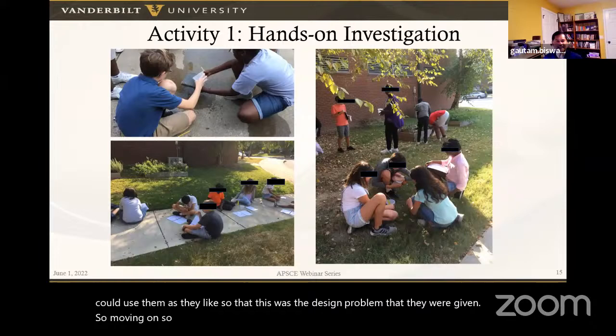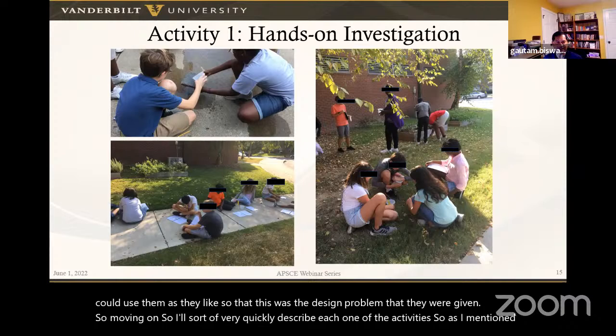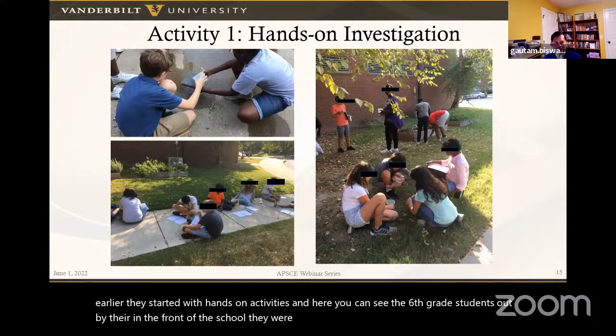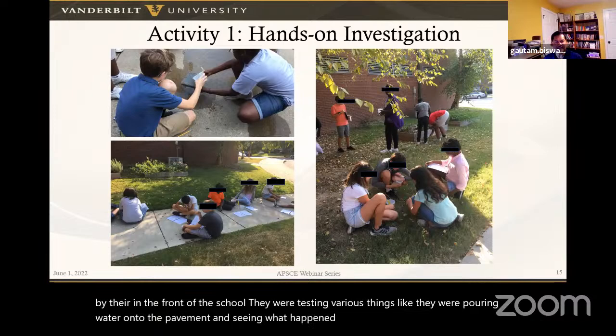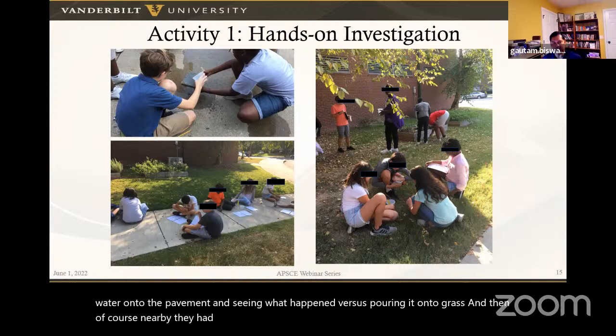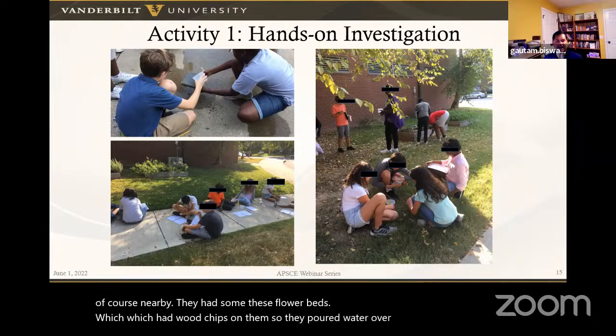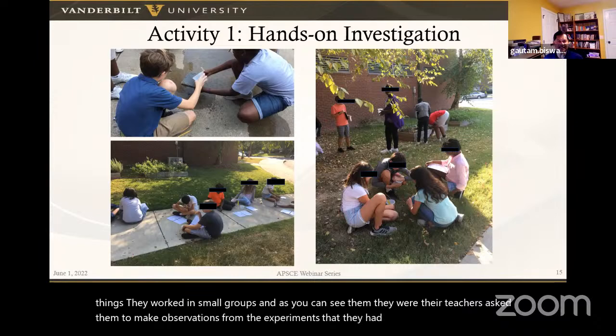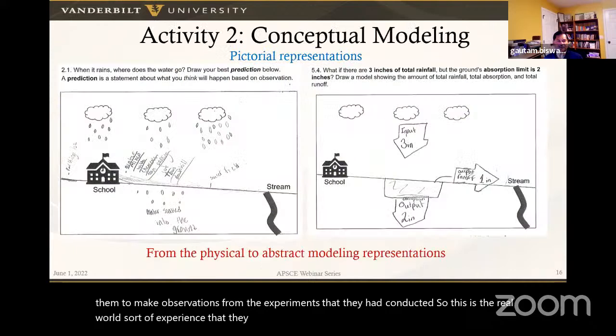Moving on, I'll describe each activity quickly. We started with hands-on activities — sixth-grade students went outside and poured water onto pavement, grass, and wood chips in flower beds, testing various materials in small groups and making observations. Teachers asked them to record observations from the experiments they conducted, giving them real-world experience with the phenomena.